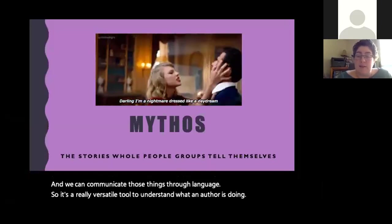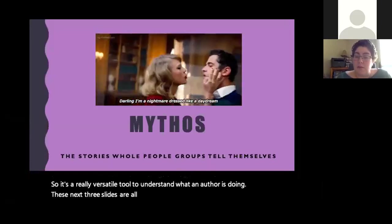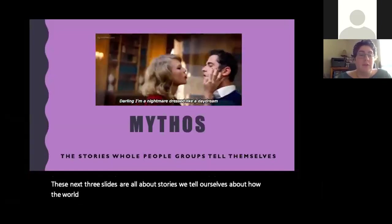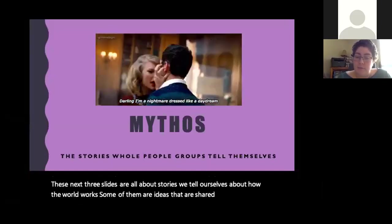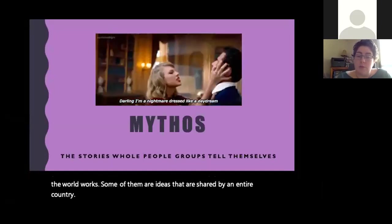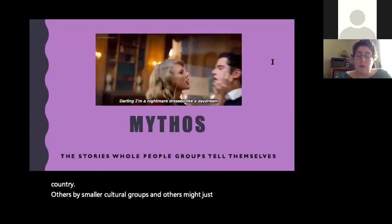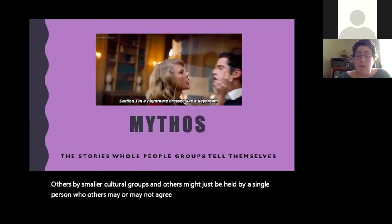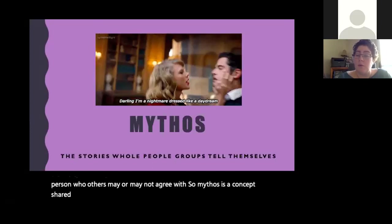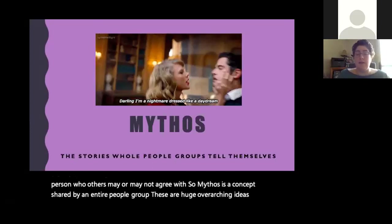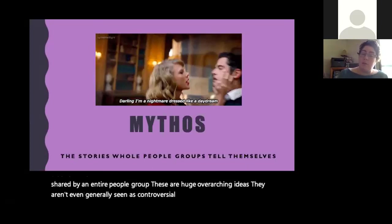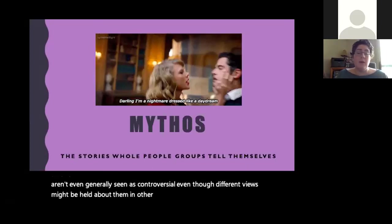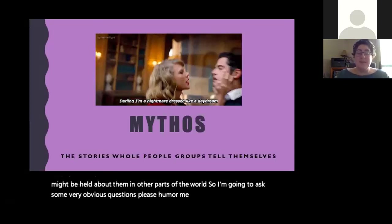These next three slides are all about stories we tell ourselves about how the world works. Some are ideas shared by an entire country, others by smaller cultural groups, and others might be held by a single person. Mythos is a concept shared by an entire people group — these are huge overarching ideas, not generally seen as controversial even though different views might be held in other parts of the world. Let me ask some obvious questions — please humor me and play along. What's a nightmare?